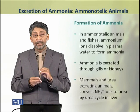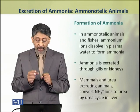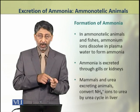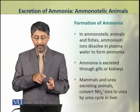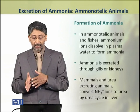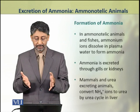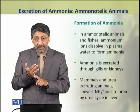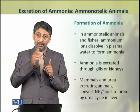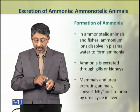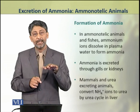In ammonotelic animals and fishes, these ammonium ions dissolve in the plasma water to form ammonia, and ammonia is excreted through gills and kidneys. In mammals and urea-excreting animals, ammonium ions are converted into urea by the urea cycle in the liver.